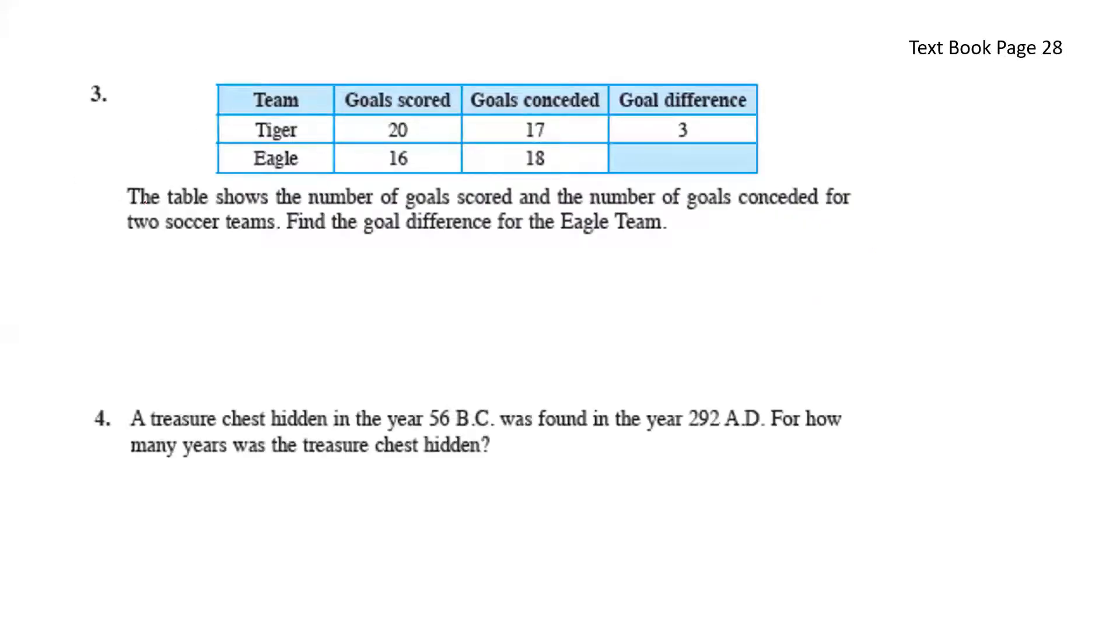The table shows the number of goals scored and the number of goals conceded for two soccer teams. Find the goal difference for the eagle team. For tiger, we have 20 minus 17 equals to 3, which means for eagle, we have 16 minus 18. That will give us negative 2.